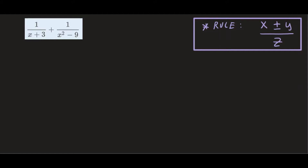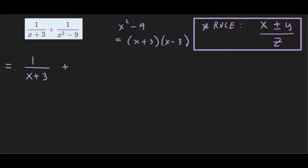We want to make sure we have the same denominators in order to combine these two fractions. So I'm going to rewrite this problem. For the first fraction we have 1 over x plus 3 — there's nothing else we can do to that. For the second fraction, x squared minus 9 is something we can factor because it's a difference of two perfect squares. We can factor that into x plus 3 times x minus 3. So I'm going to replace that on the denominator, giving us x plus 3 and x minus 3 on the bottom, and 1 on top.